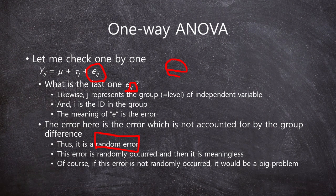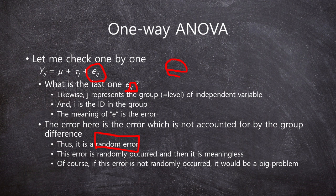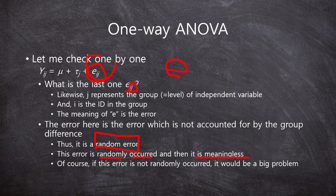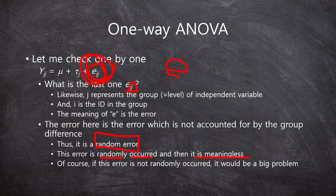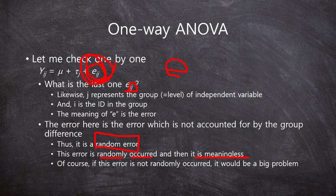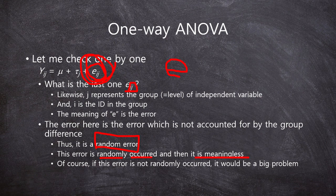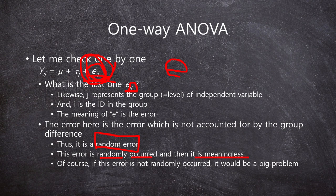I will explain later more about the random error anyway. But, in this case, the error is randomly occurred and it is meaningless. That is important. This error is randomly occurred. So, this error is meaningless. There is no meaning in this error. It is just random. Of course, if this error is not randomly occurred, it would be a big problem in statistics. But, we assume this error is random.